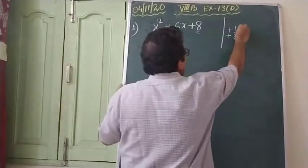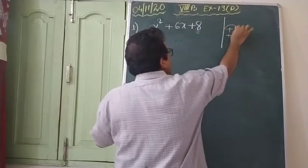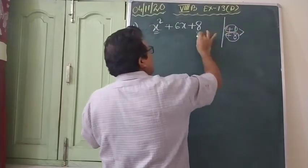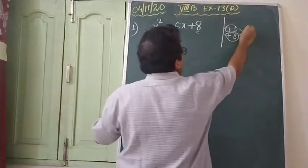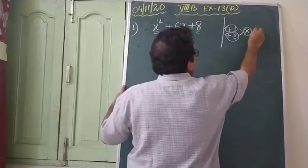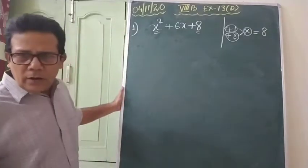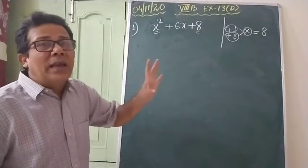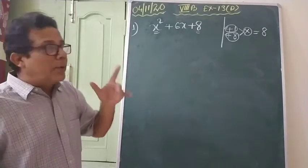Now, if you take these two, you multiply them — the coefficient of the highest power term and the constant present there. After multiplying them: eight into one, what will come? Eight only. Now, you have to find the factors of eight.